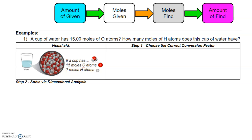So we're going to look at the example problems from Unit 7 Day 2. The first example problem says: a cup of water has 15 moles of oxygen atoms — how many moles of hydrogen atoms does this cup of water have? Before we start tackling the problem, we'll look at the visual aid to get a sense of what this question is asking. Picture a cup of water where you remove all the oxygen atoms — you determine that's equivalent to 15 moles of oxygen. Now someone asks how many hydrogen atoms does it have? You can use the stoichiometry process to solve that.